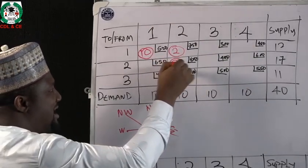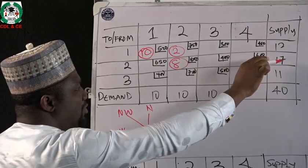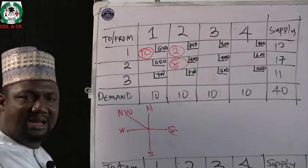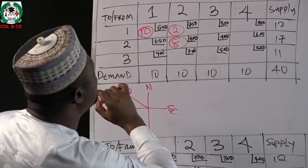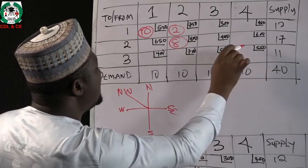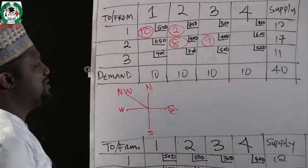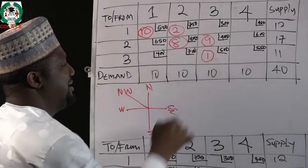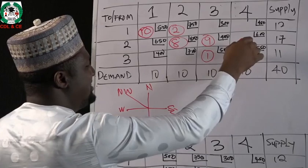Continuing the allocation: 1 is placed in the next cell, and 10 balances the remaining column, giving 1 plus 10 equals 11, and the final cell is 10. We now have 6 shipping routes. Checking the rim condition: M plus N minus 1, with 3 rows and 4 columns gives 3 plus 4 minus 1 equals 6. The number of shipping routes equals 6, satisfying the rim condition.